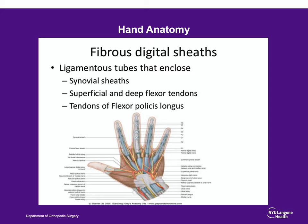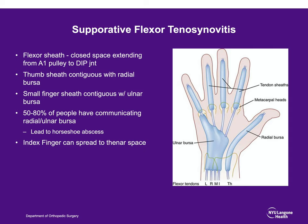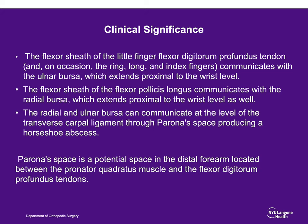To understand the deeper infections, we need to review some hand anatomy and the flexor tendon sheaths. These synovial sheaths are tubes that enclose the deep flexor tendons, superficial tendons, and the FPL. Septic flexor tenosynovitis, or pyogenic flexor tenosynovitis, is an infection involving this closed tube. Infections can spread into the radial or ulnar bursa — particularly the small finger into the ulnar bursa, and the FPL into the radial bursa. The index finger can spread to the thenar space. It is clinically important to know your anatomy and which infections can extend into other spaces.